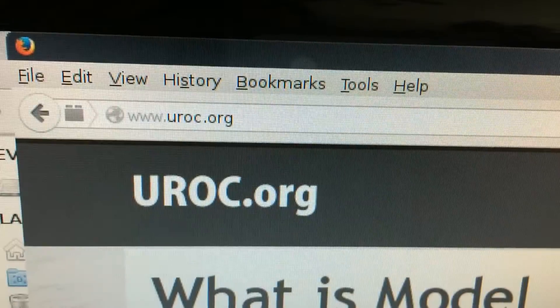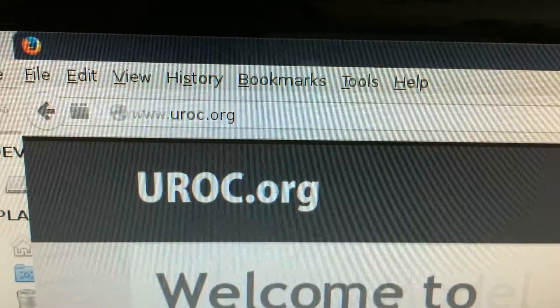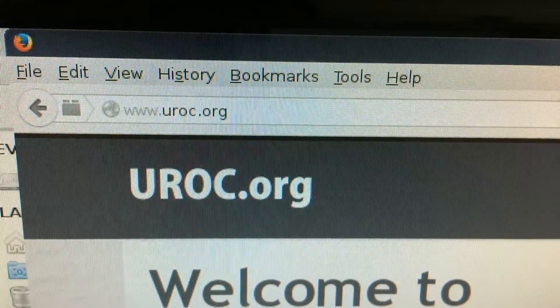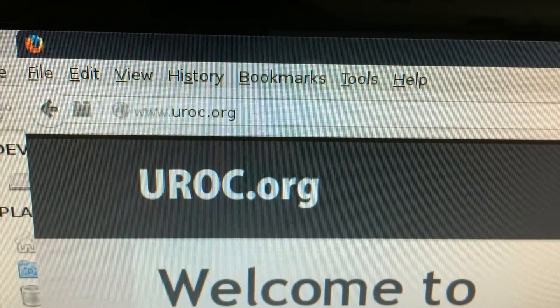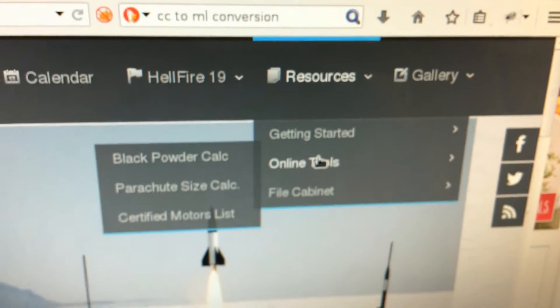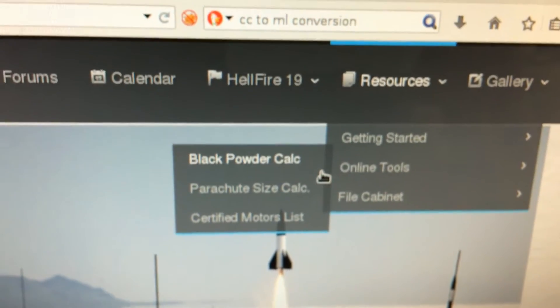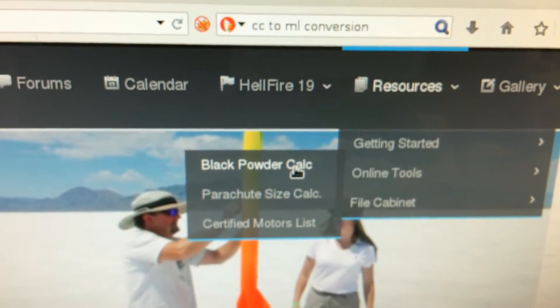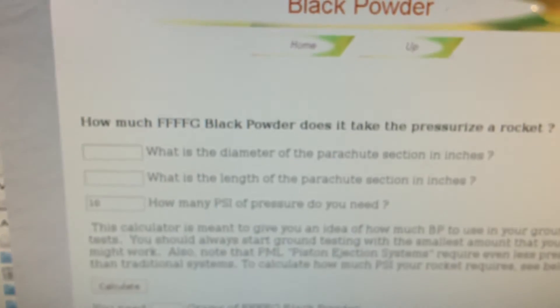The next part is to find out how much black powder you need for the area of deployment you're going to use. In my case I go to uroc.org and under their resources you'll see some online tools. I go to black powder calc and they've got a great black powder calculator here.